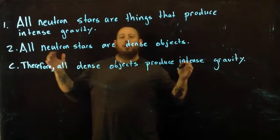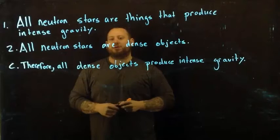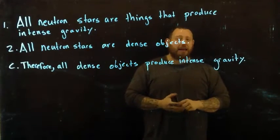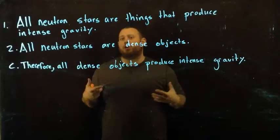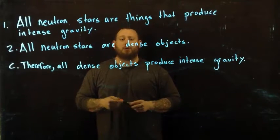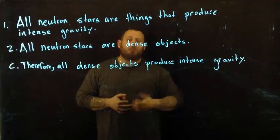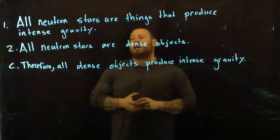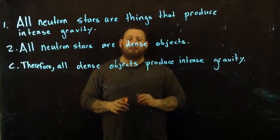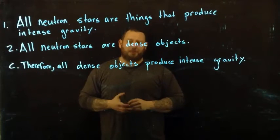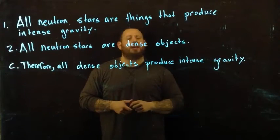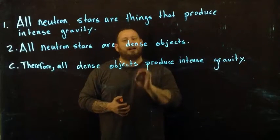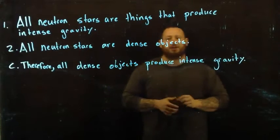Here we have an example of putting together categorical statements into what is called a categorical syllogism. A categorical syllogism is an argument that relies on various categorical statements. Your book provides a way of determining validity using a Venn diagram, and that is one way you can determine validity — see your book to learn that process.